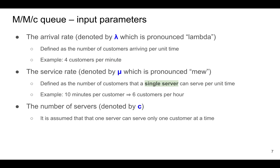In an MMC queue, we have the following input parameters. The arrival rate, denoted by lambda, is defined as the number of customers arriving per unit time — for example, four customers arrive every minute on average. The second parameter is the service rate, denoted by mu, defined as the number of customers that a single server can serve per unit time. For example, if it takes on average 10 minutes to serve a customer, then a server can serve six customers in an hour. Finally, the number of servers is denoted by c, and in the queuing model we assume one server can only serve one customer at a time.